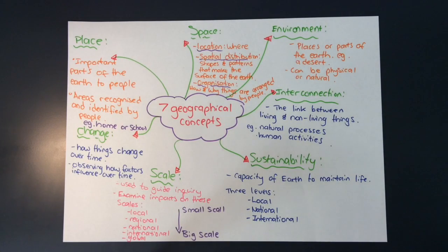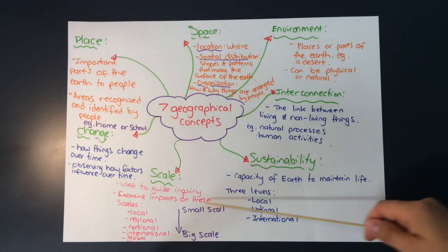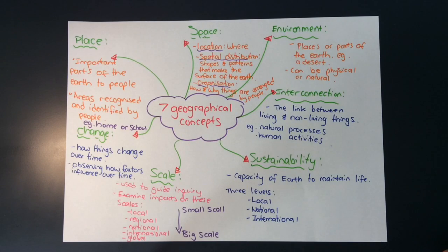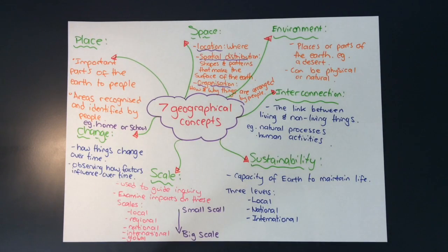Scale is used to guide inquiry, so geographers examine different impacts on different scales — from small scale to a big scale: local, regional, national, international, and global. Local would be something like where you are located, your current place. Regional is a larger area. National is like your country. International is more of the connections between different countries, and global is how all those countries are operating together.